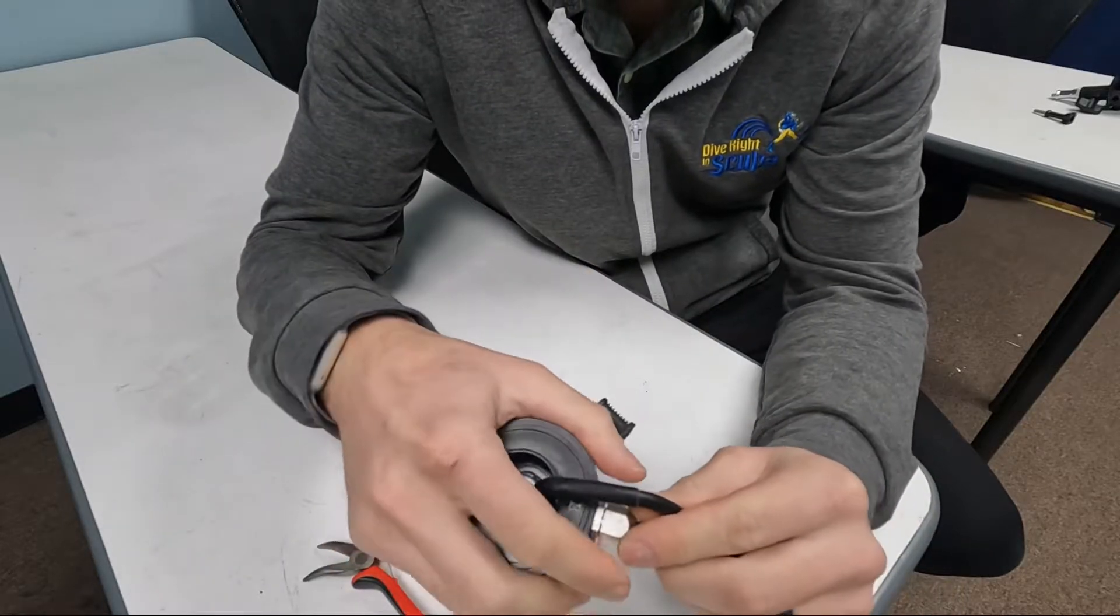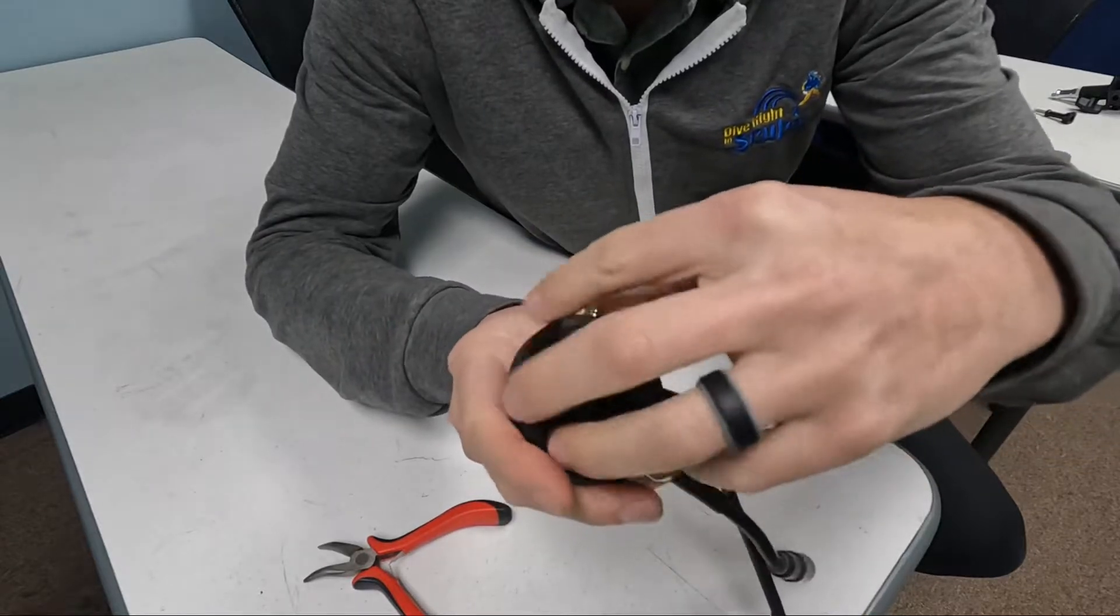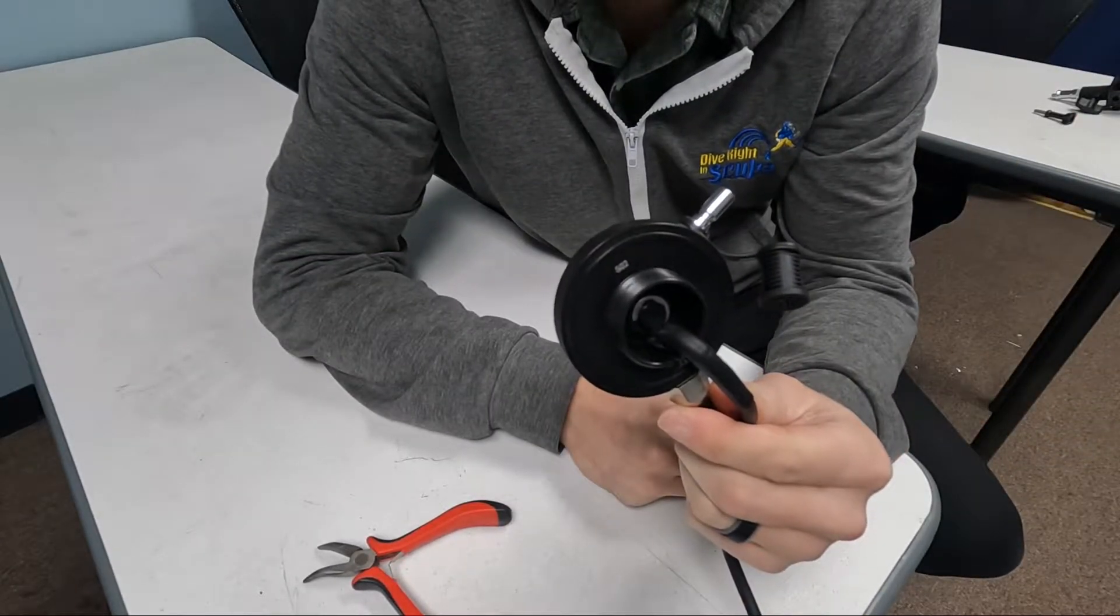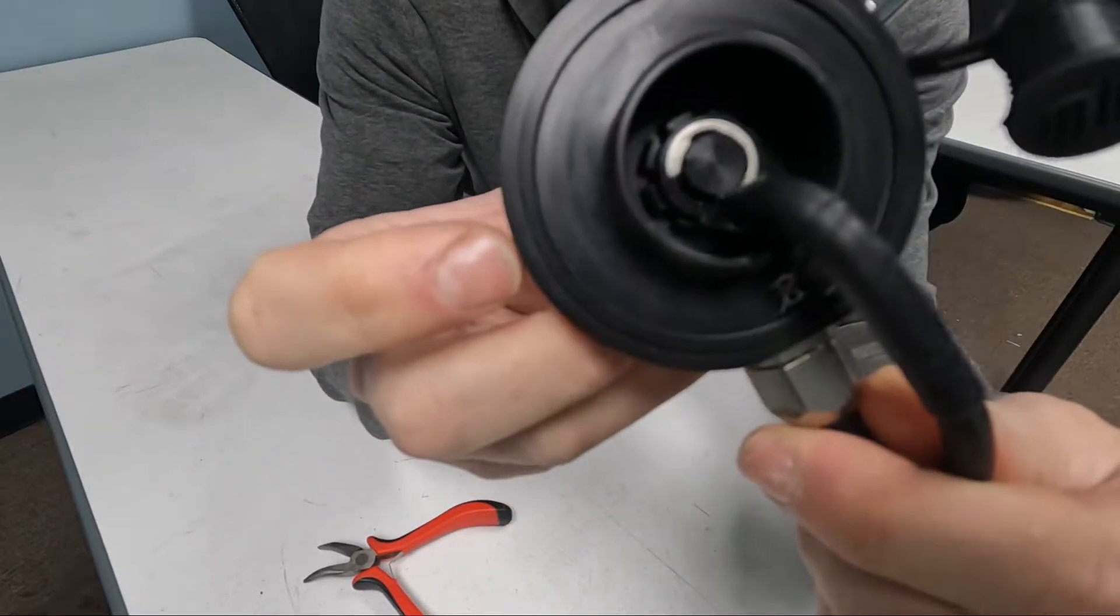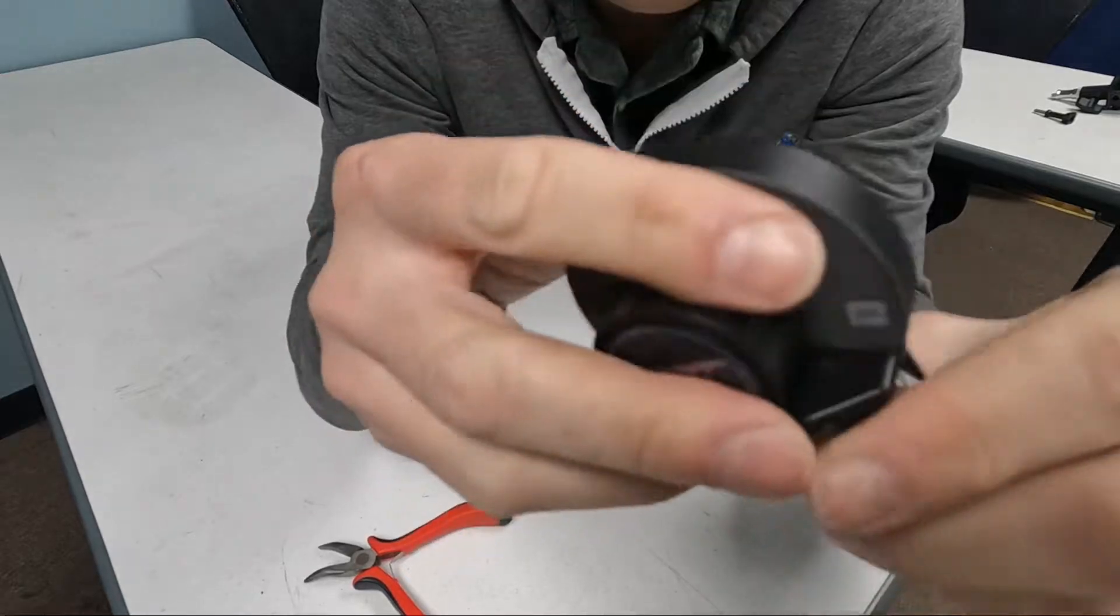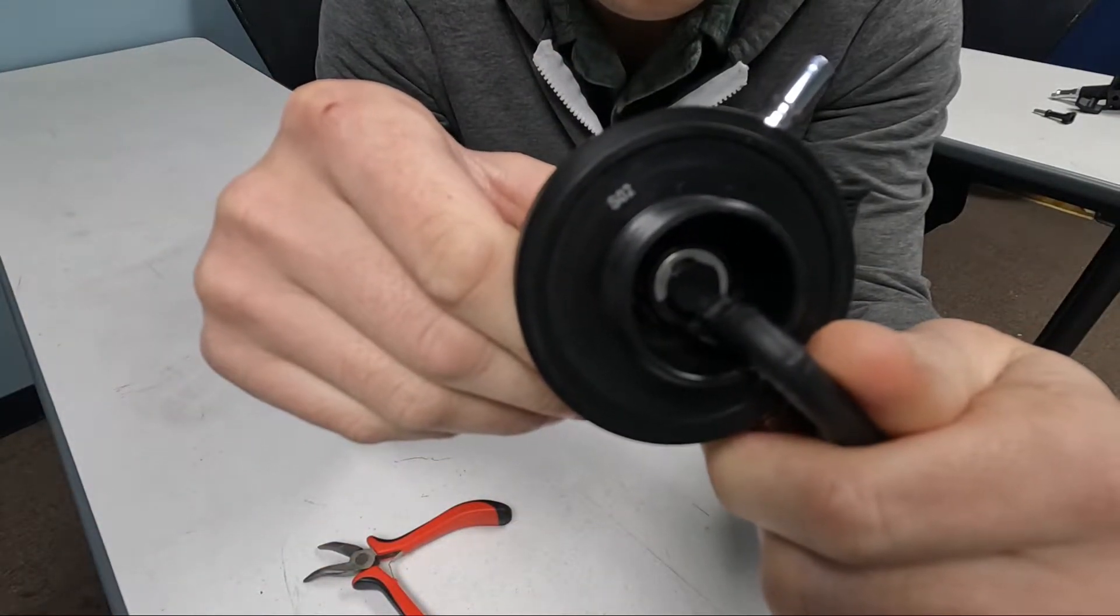So you're gonna first remove the 303 valve from your drysuit just by unscrewing the back cap so that we have access to the valve. And then if you look inside the valve, you've got a C-clip and obviously we've got the button side, so what I'm gonna do here is I'm gonna remove that C-clip.